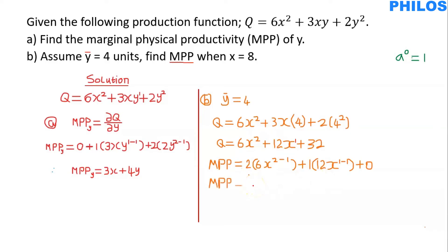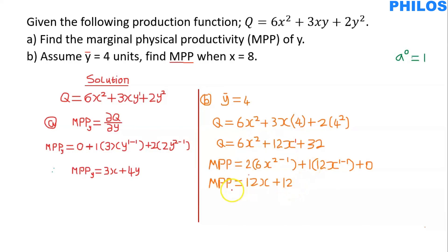Simplifying: MPP equals 2 times 6 is 12, and x to the exponent 1 — since 2 minus 1 is 1 — remains x, giving 12x. Plus, 1 minus 1 is 0, and x to the power 0 is 1, so 1 times 12 times 1 gives 12. Therefore MPP equals 12x plus 12.